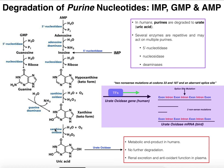On the 5-membered ring, the carbon atom between the two nitrogens receives a hydroxyl group, and that molecule is called uric acid. Sometimes you'll hear it referred to as urate, but uric acid is the acid form of this molecule.